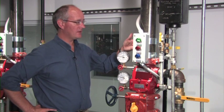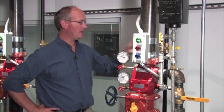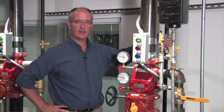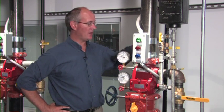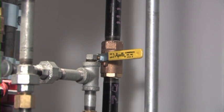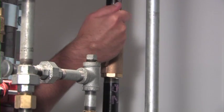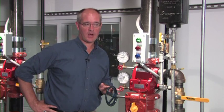On our riser, we can simulate a water flow through a valve in the back. This would either be an open sprinkler head or it could be piping that would be broke on a system where the water flow is established. At this point, we'll open the valve, establish our water flow.